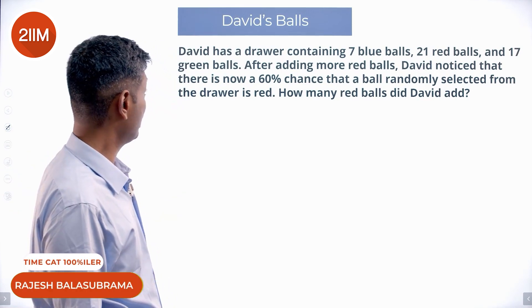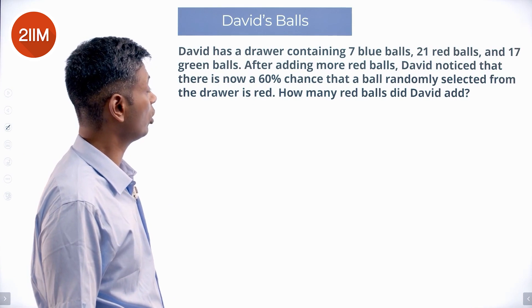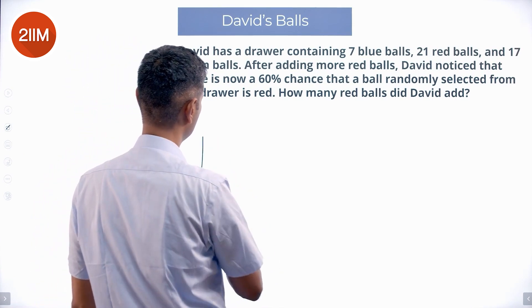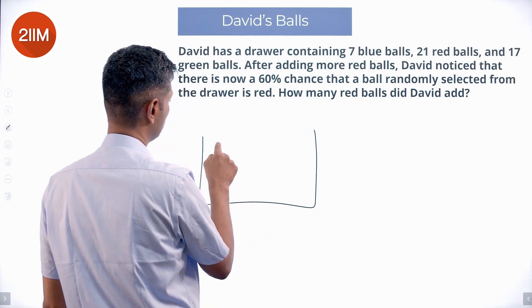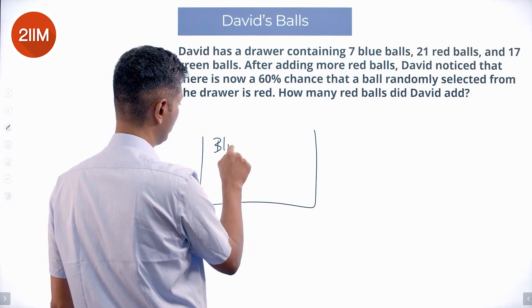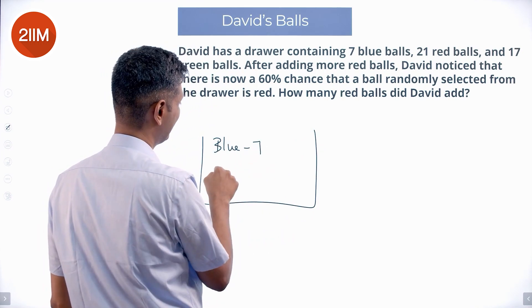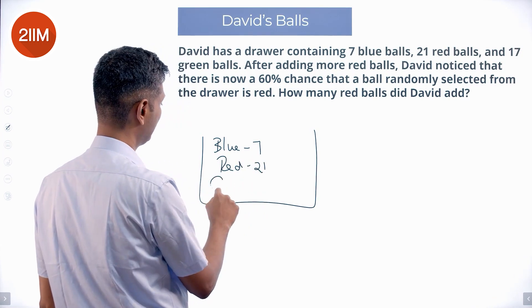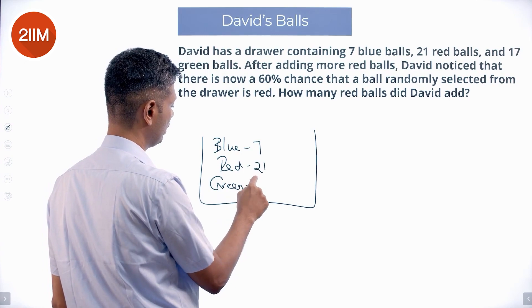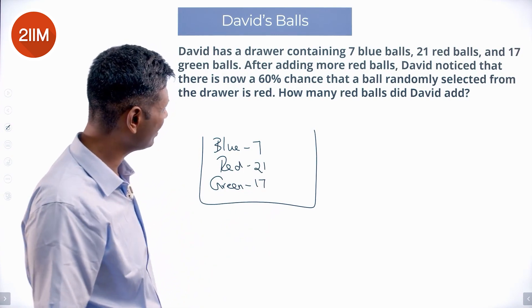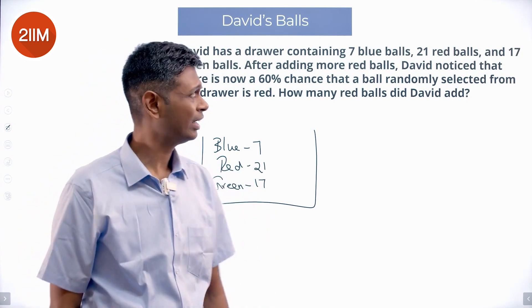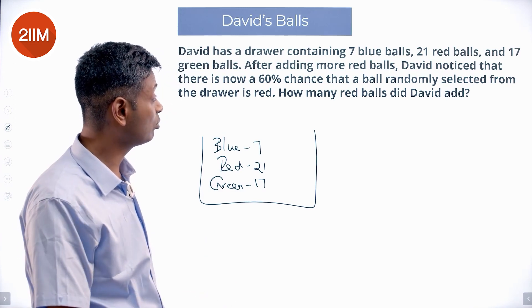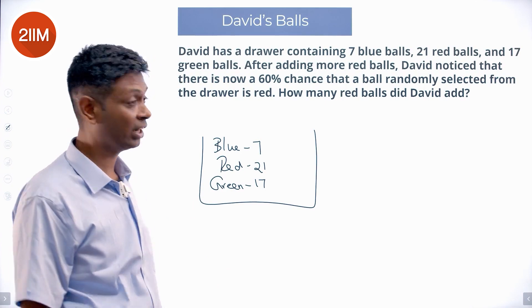David has a drawer containing 7 blue balls, 21 red balls, and 17 green balls. Blue he has 7 of them, red he has 21 of them, green he has 17 of them. After adding more red balls, David noticed that there is now a 60% chance that a ball randomly selected from the drawer is red.